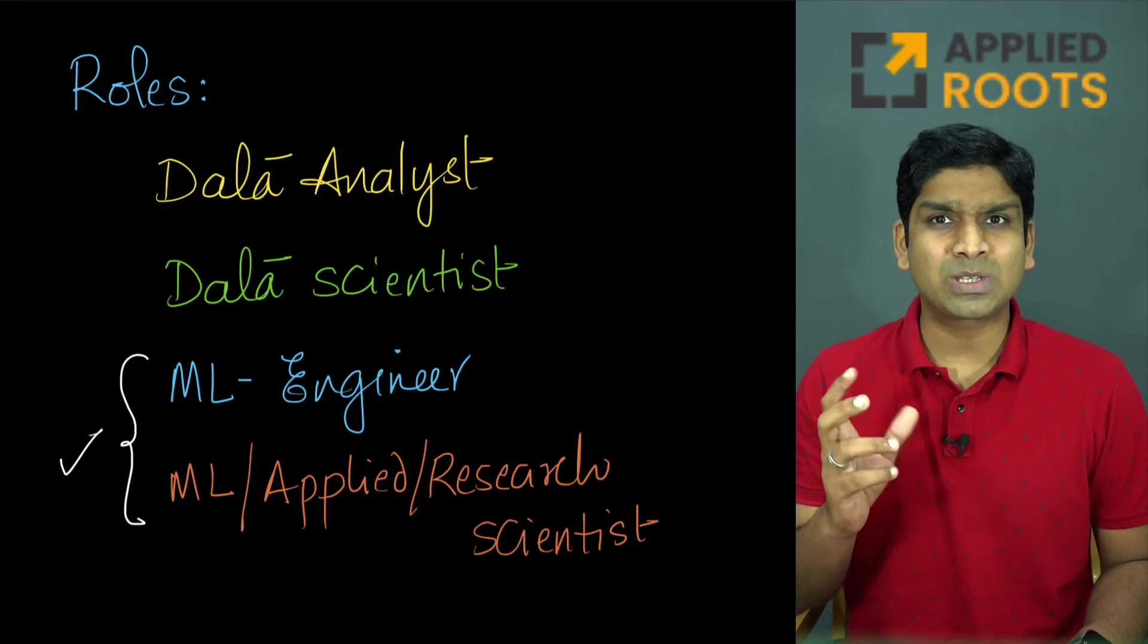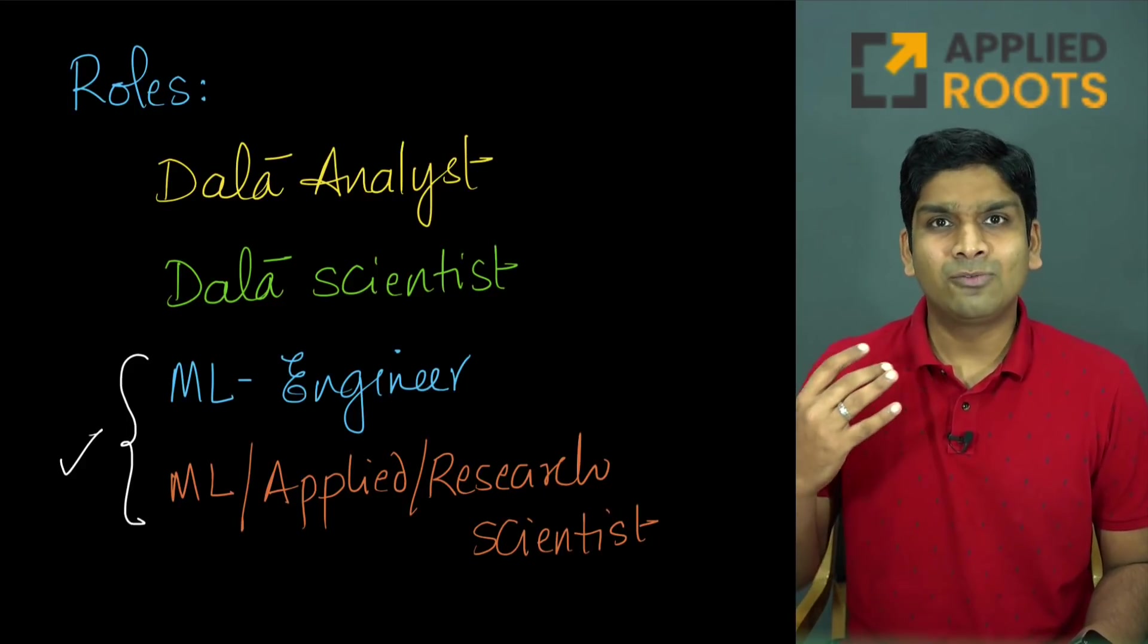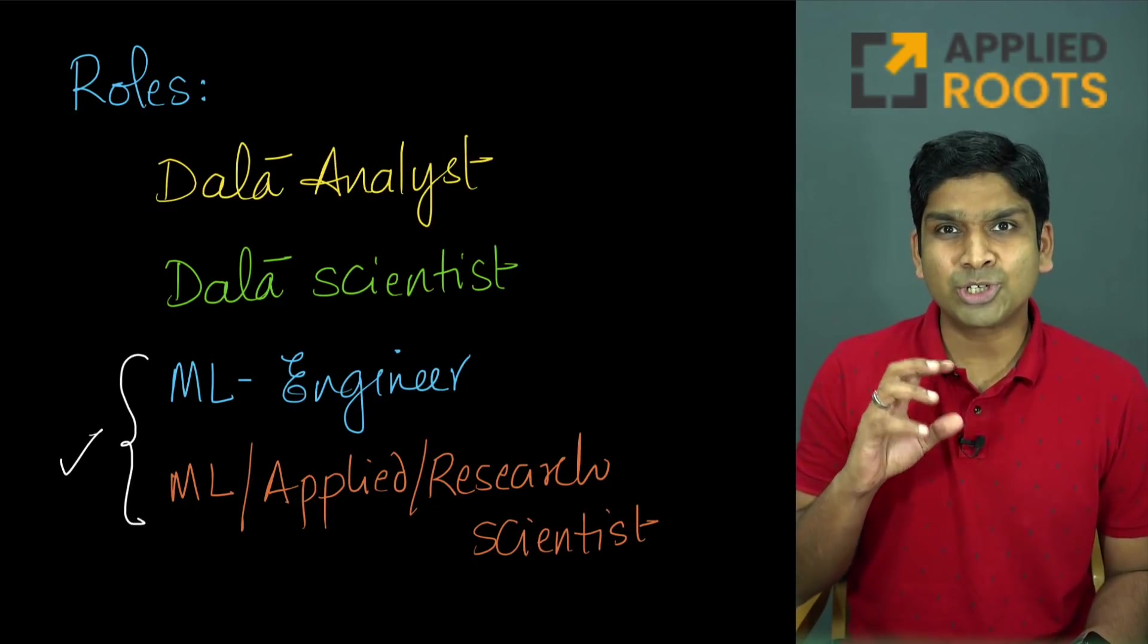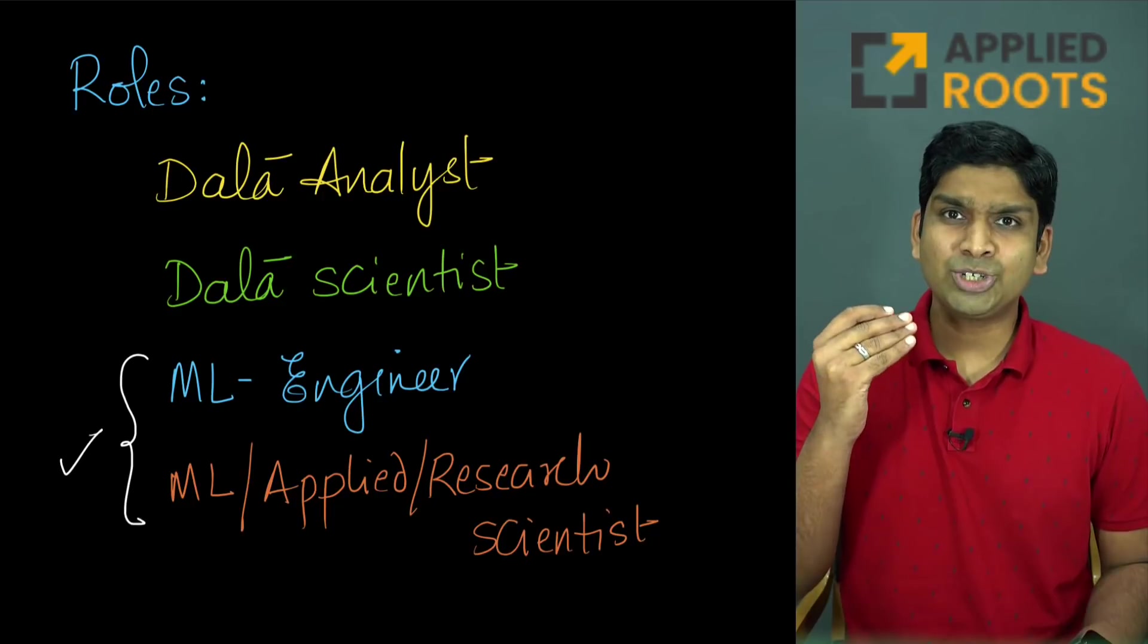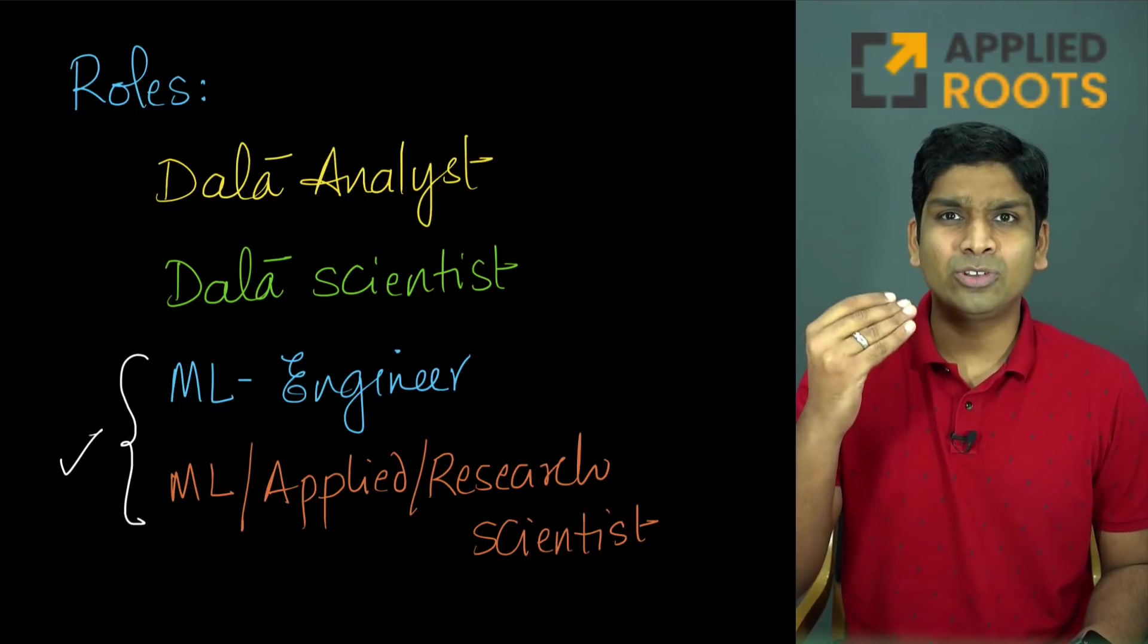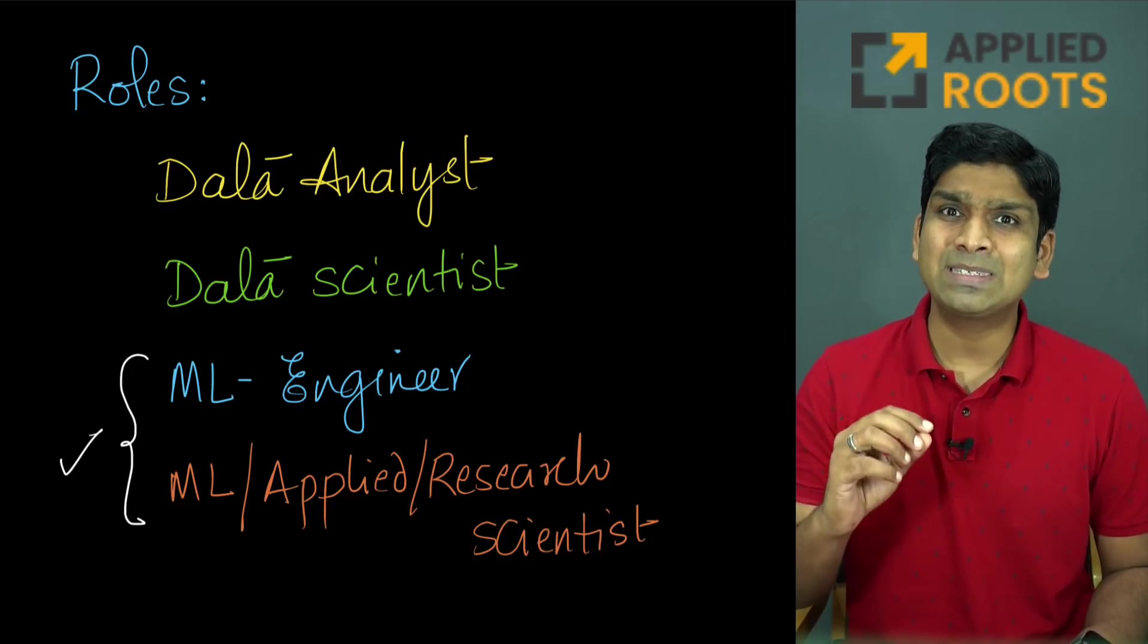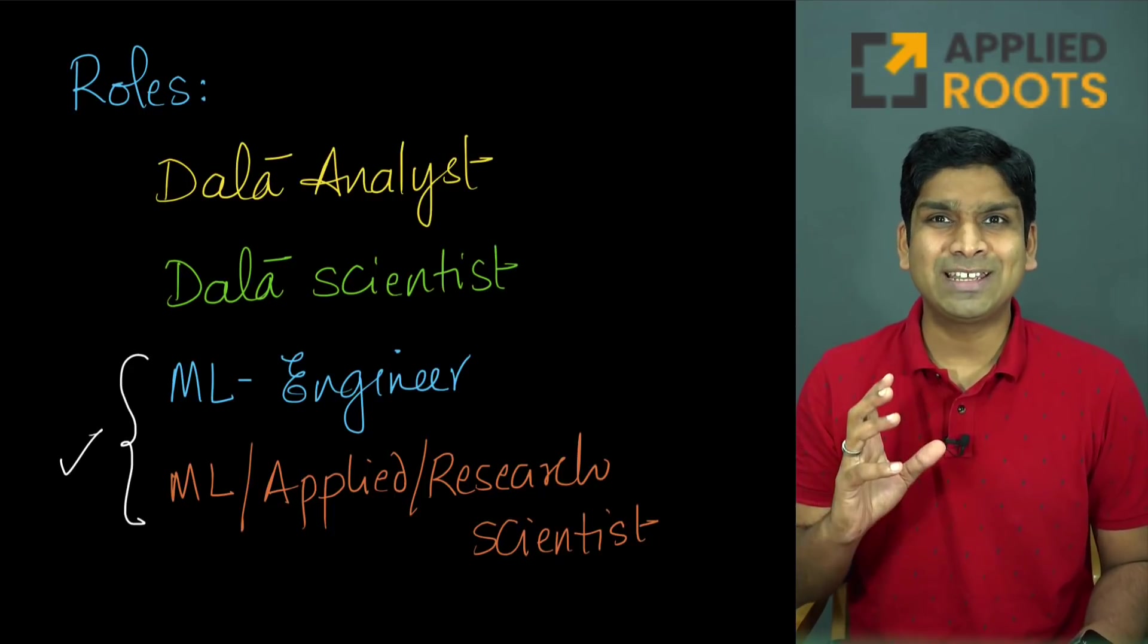The titles and names could differ slightly from company to company. Typically your machine learning engineers and machine learning scientists make the highest compensation, followed by data scientists, followed by data analysts. The compensations of machine learning engineers and machine learning scientists is very close with a slight difference. In this video we will focus on machine learning engineer and machine learning scientist type of roles.